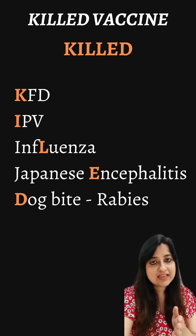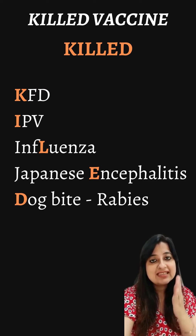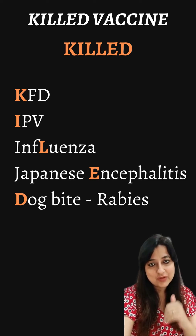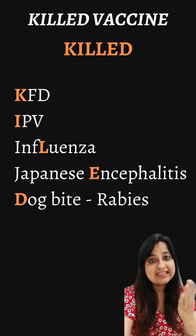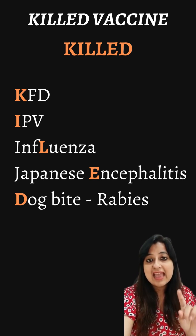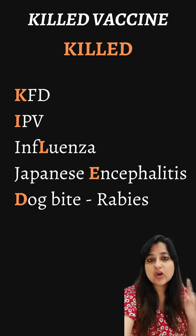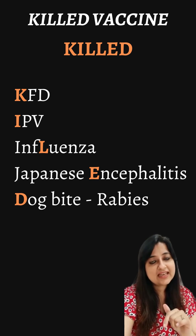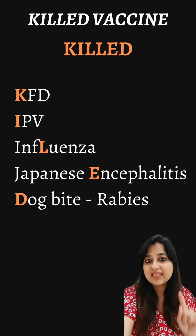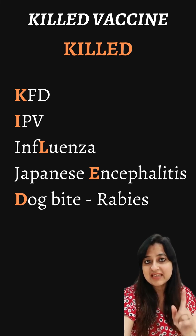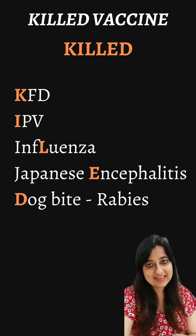For killed vaccines, the mnemonic is KILLED. K stands for KFD, I stands for IPV, L stands for influenza killed, and E stands for Japanese encephalitis killed.